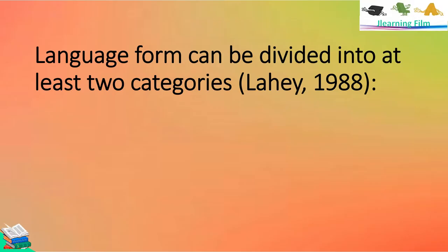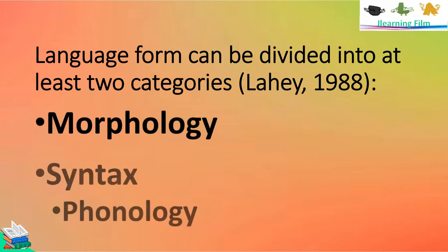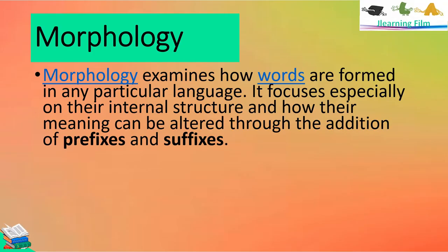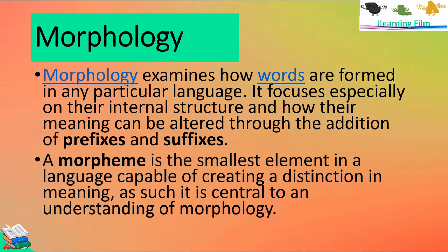Language form can be divided into two categories according to LAI 1988: morphology and syntax. Morphology examines how words are formed in any particular language. It focuses especially on their internal structure and how their meaning can be altered through the addition of prefixes and suffixes. Prefixes are the word part added before the word, and suffixes are the word part added after the word. A morpheme is the smallest element in the language capable of creating distinction in meaning — it is central to an understanding of morphology.